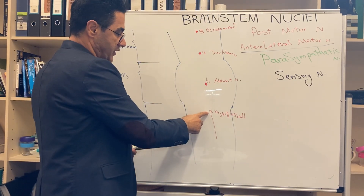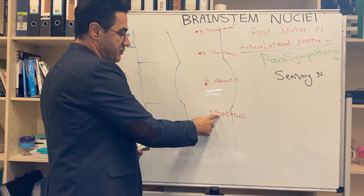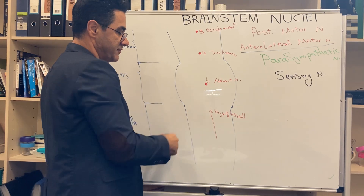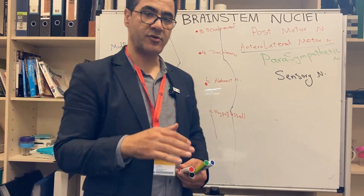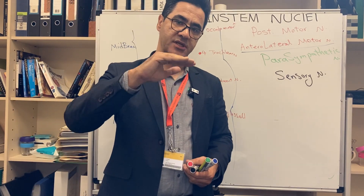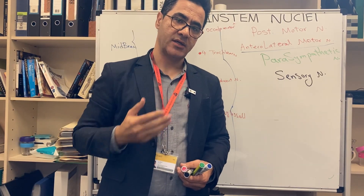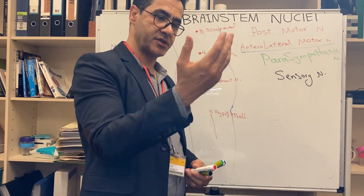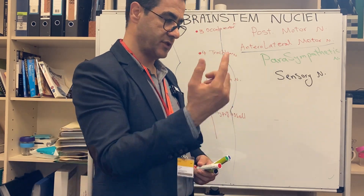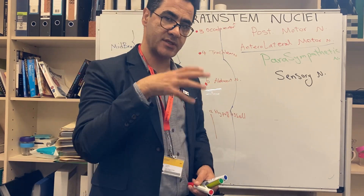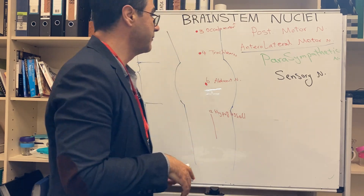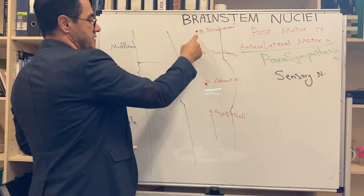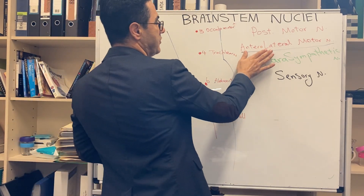Cranial nerve 12, hypoglossal, is coming out of the hypoglossal nucleus. Hypo means underneath, gloss means tongue. It penetrates into the tongue and supplies all muscles of the tongue. So eyeball and tongue — cranial nerves 3, 4, 6, and 12.